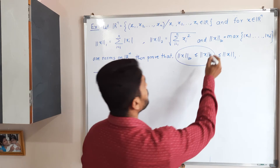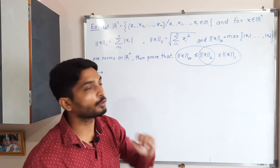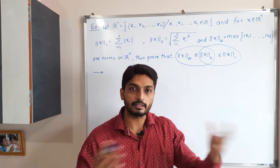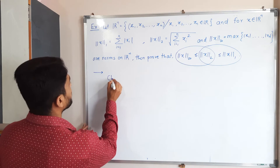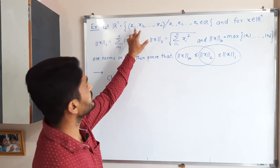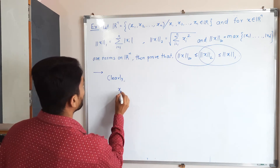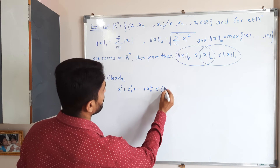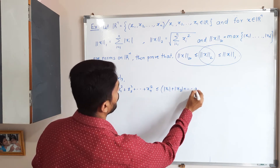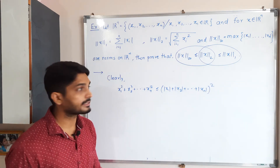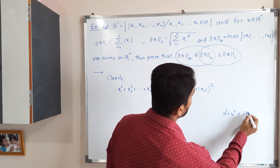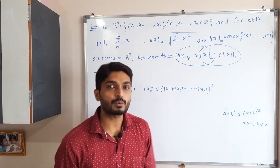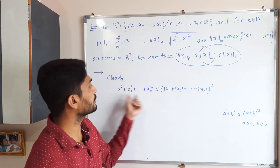Now we will focus on the second part of the inequality: we will prove ‖x‖₂ ≤ ‖x‖₁. With the same x = (x₁, x₂, ..., xₙ), clearly x₁² + x₂² + ... + xₙ² ≤ (|x₁| + |x₂| + ... + |xₙ|)². This follows because a² + b² ≤ (a + b)² provided a and b are non-negative, and here we have taken the modulus so all terms are non-negative.